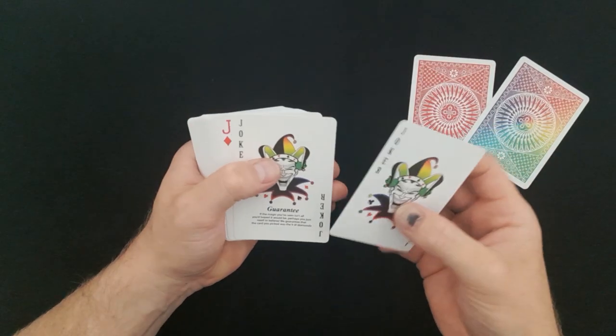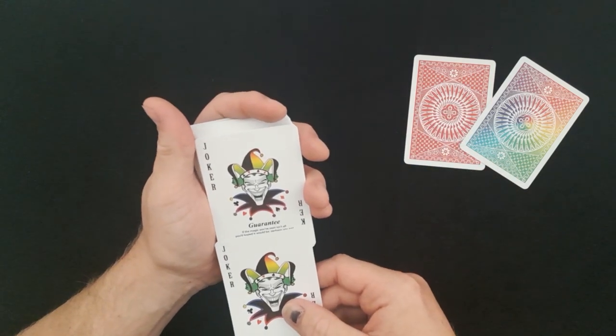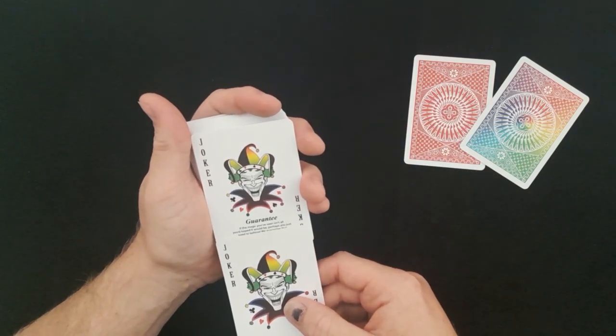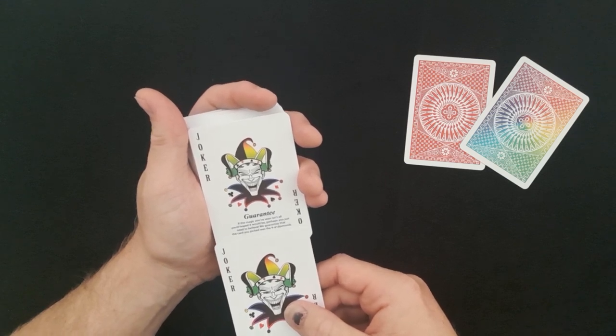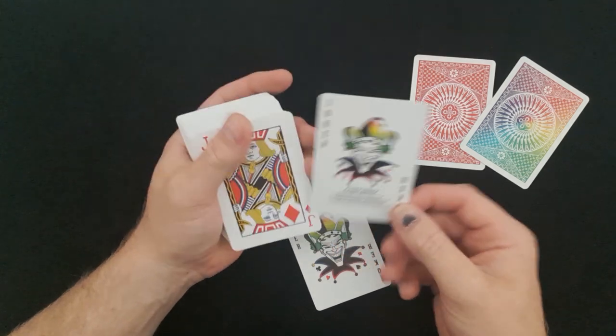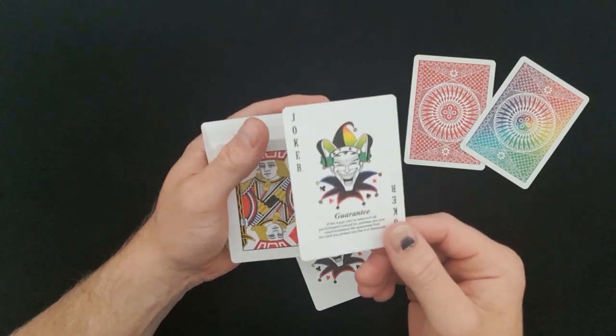Okay you've got two jokers, one with a guarantee card. If the magic you've seen isn't all you'd hoped it would be, perhaps you just need to believe. We guarantee that the card you'll be picked is the nine of diamonds. So that's a cool reveal on the joker there, which is really nice.